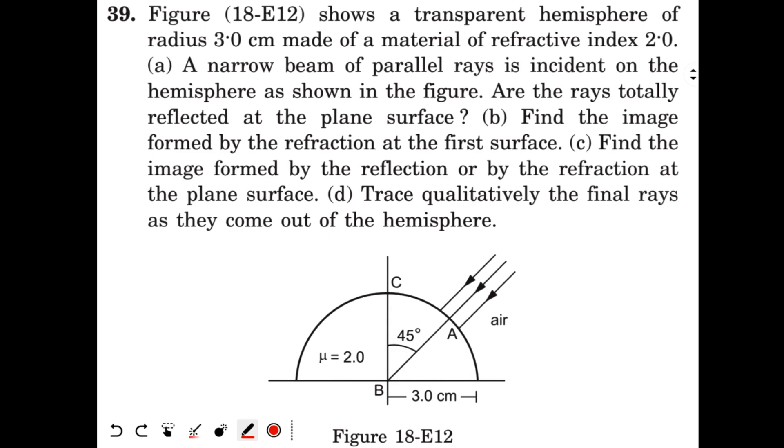Okay, question number 39 from chapter 18 of H.C. Verma. Figure shows a transparent hemisphere of radius 3 cm made of a material of refractive index 2. A narrow beam of parallel rays is incident on the hemisphere as shown in the figure. Are the rays totally reflected at the plane surface?